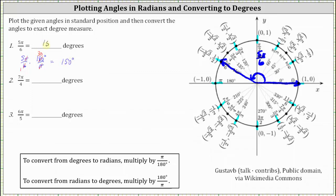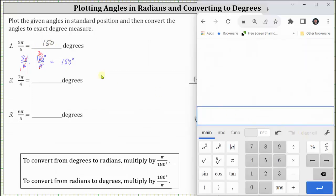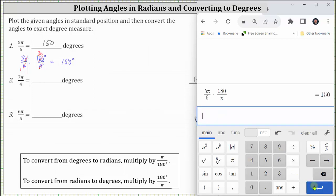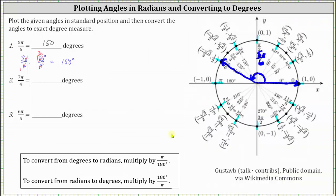We can also check this on Desmos Scientific Calculator by entering five pi divided by six, then times 180 divided by pi, and we do get 150. Next, we have seven pi divided by four radians, or seven-fourth pi radians.